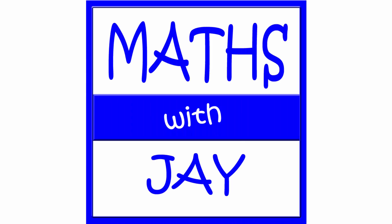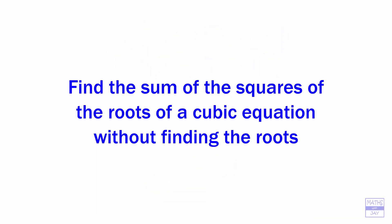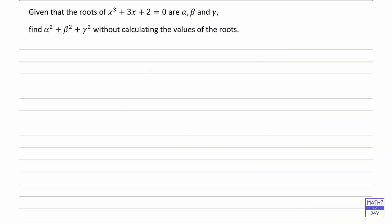Hello, welcome to Maths with Jay. So here we know that alpha, beta and gamma are the three roots of the cubic equation that we've got here. So let's just write down what that tells us.